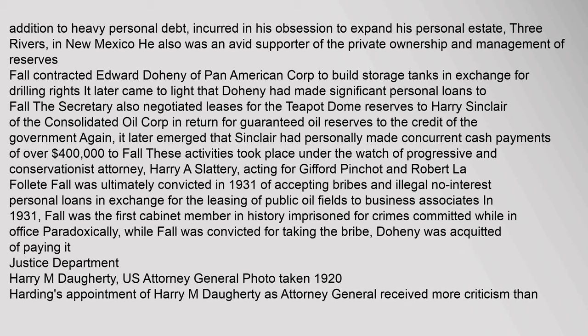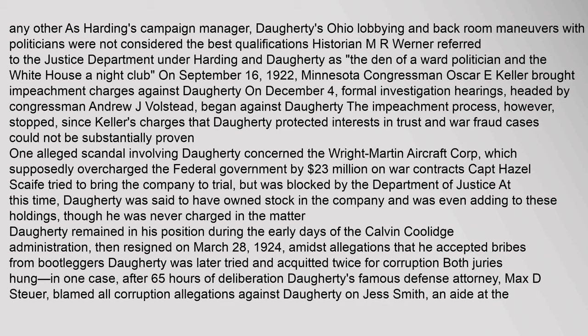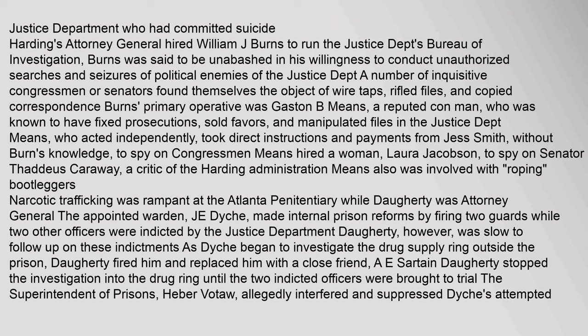Harding's appointment of Harry M. Daugherty as Attorney General received more criticism than any other. As Harding's campaign manager, Daugherty's Ohio lobbying and back-room maneuvers with politicians were not considered the best qualifications. Harding's Attorney General hired William J. Burns to run the Justice Department's Bureau of Investigation. Burns was said to be unabashed in his willingness to conduct unauthorized searches and seizures of political enemies. A number of inquisitive congressmen or senators found themselves the object of wire taps, rifled files, and copied correspondence.